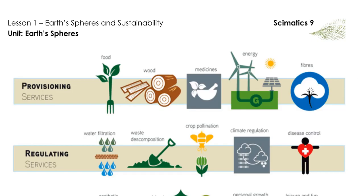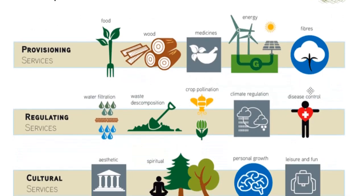Regulating services are benefits obtained from the environment because of the way in which it naturally regulates itself to process waste, to process nutrients, and maintain balance. Examples of regulating ecosystem services include climate regulation, natural hazard regulation, water purification, waste management, pollination, pest control, and disease control.